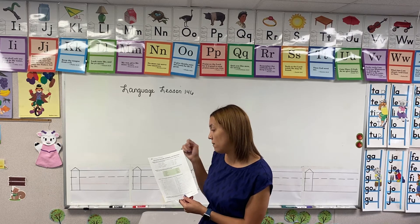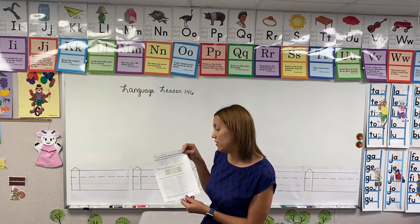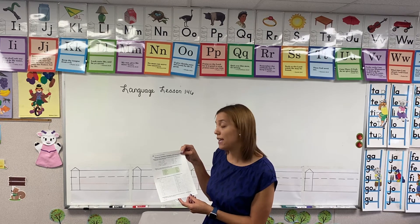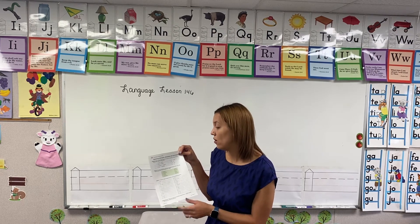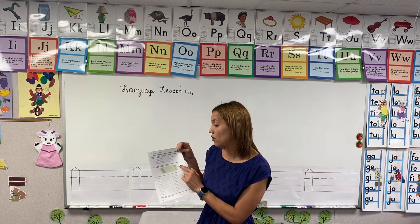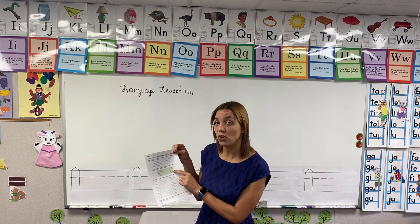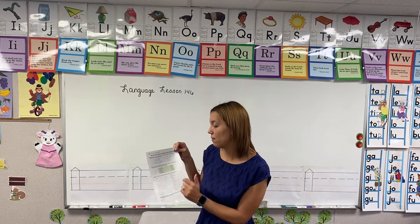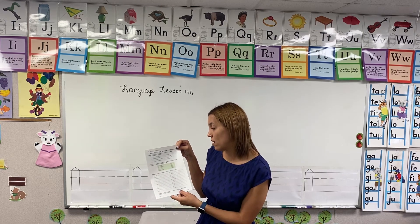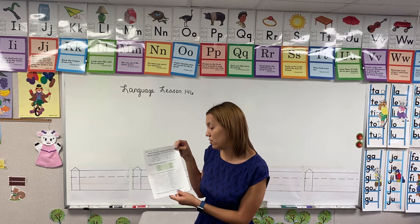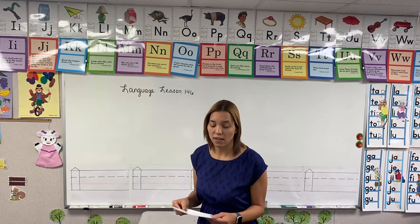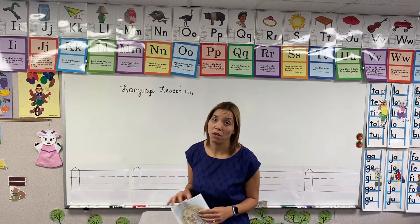In activity B, you're going to use your dictionary to find the meaning of each word on the left, then draw a line to its antonym. So you look at the word on the left, see what it means, and then choose the antonym — the opposite. In activity C, you are going to correctly spell a homonym for each of the following words. Remember, homonyms are words that are similar in meaning.